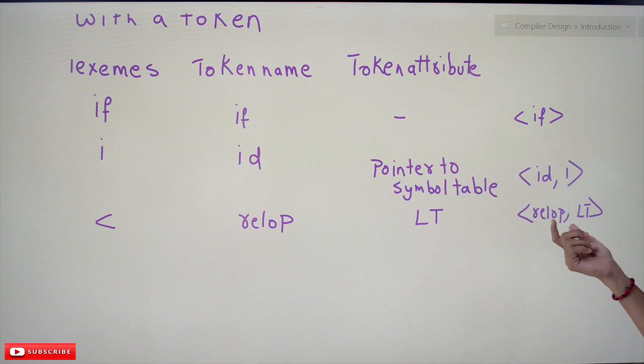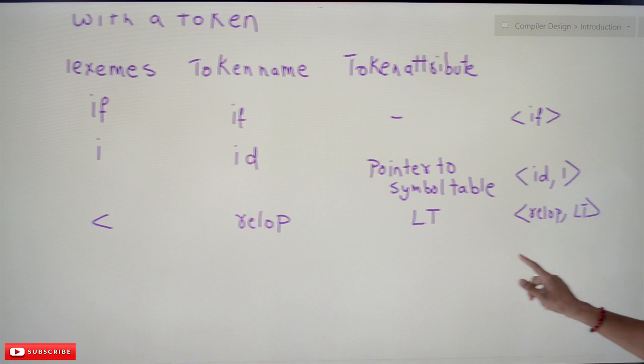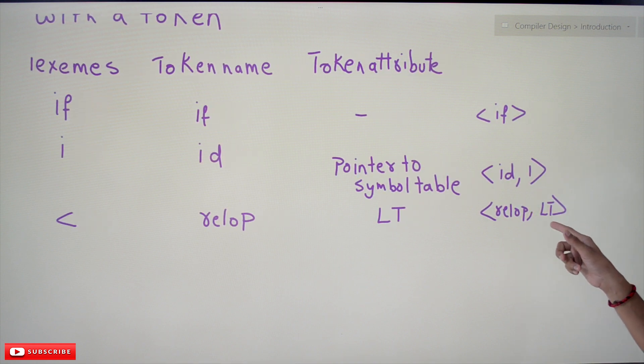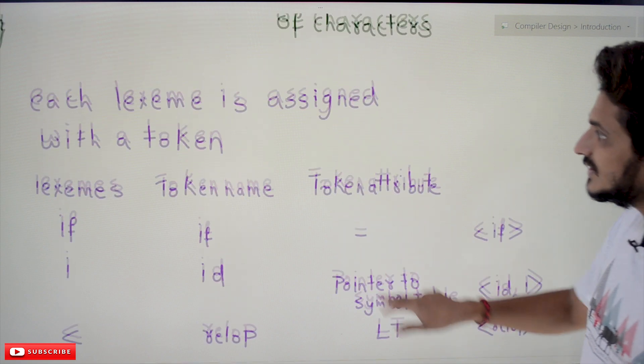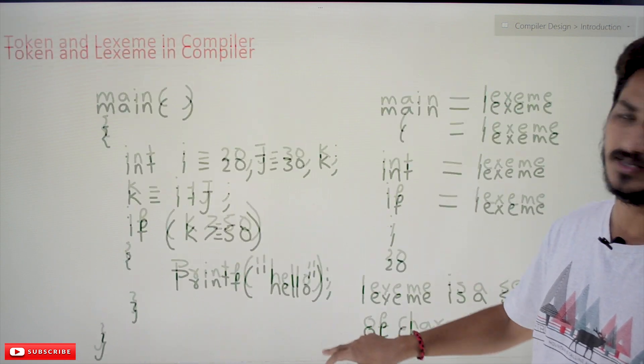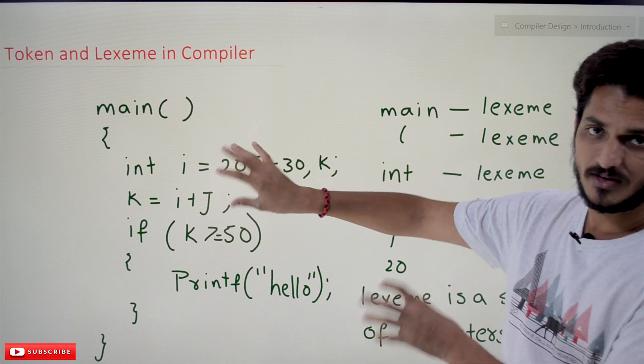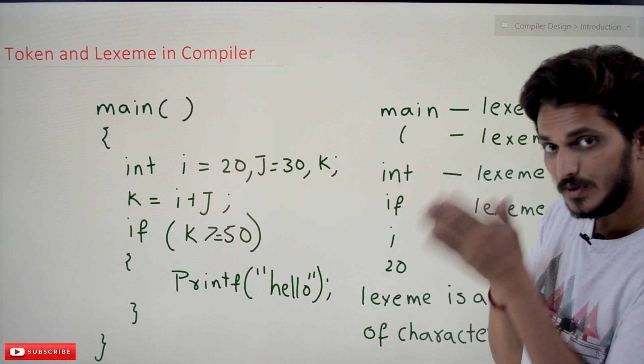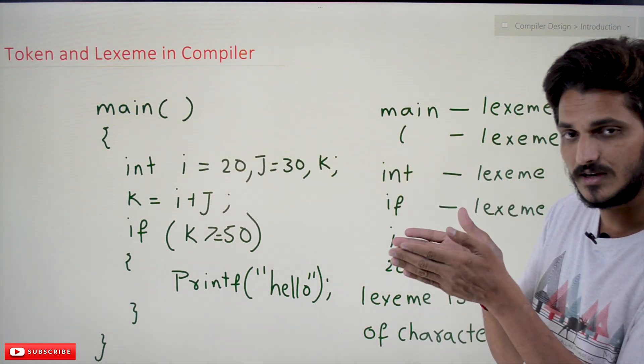Relational operator comma LT value. So this is what the outputs that are generated by the lexical analysis phase. It will read the characters and group them as a group. The set of characters, those set of characters we call them as lexemes.